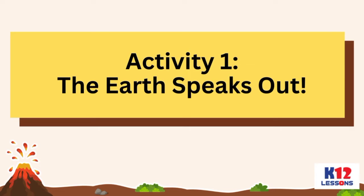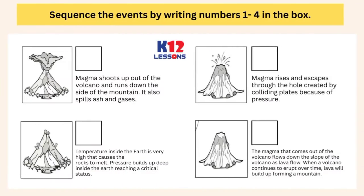Activity 1: The Earth Speaks Out. Sequence the events by writing numbers 1 to 4 in the box.